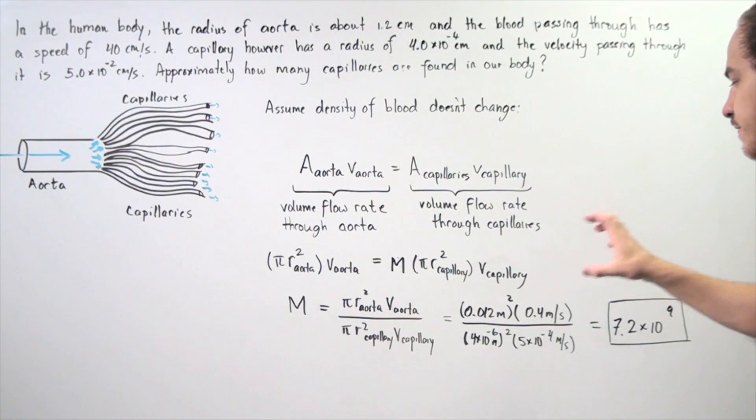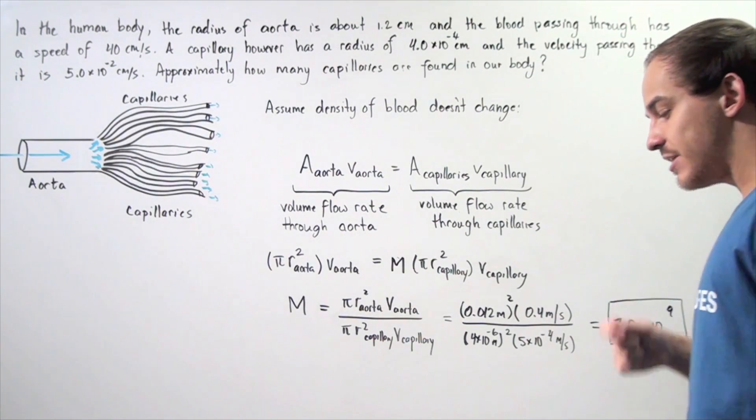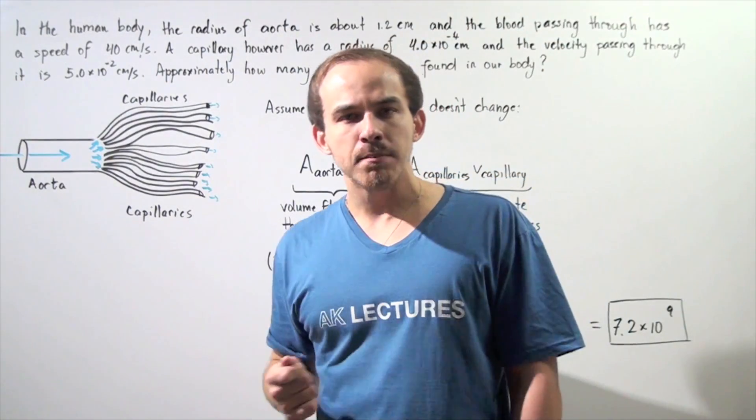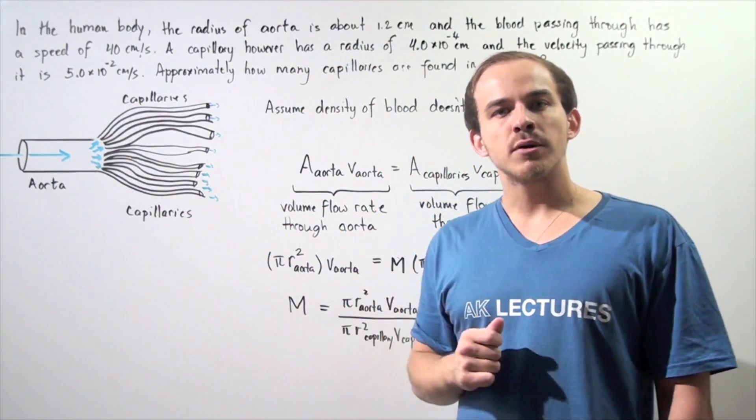I multiply, divide, and I get about 7.2×10^9 capillaries in the body. So approximately, there are about 7 billion capillaries found in our body.